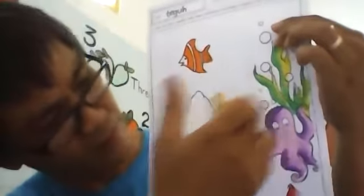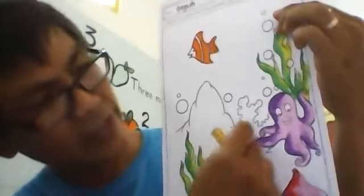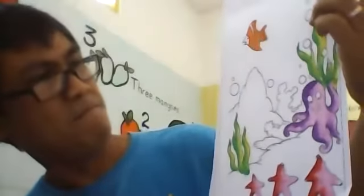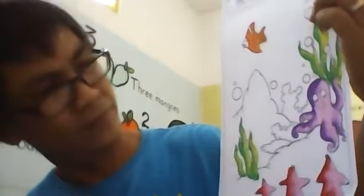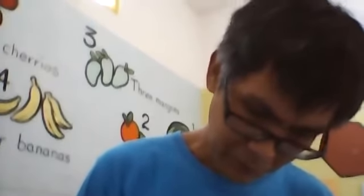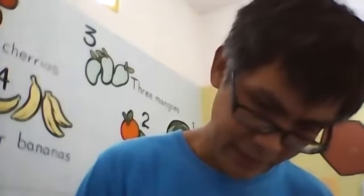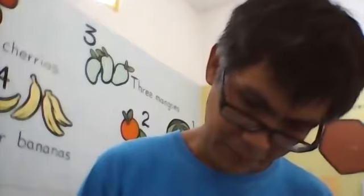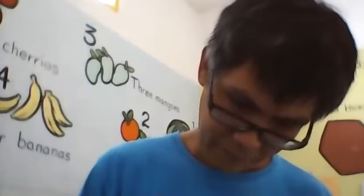Already finished with the seaweed. Now we will color the coral. Mr. Teguh will use dark blue and light blue — let's see, mix dark blue and light blue. Let's see the result after this. You may color the coral with another color.